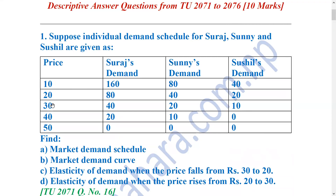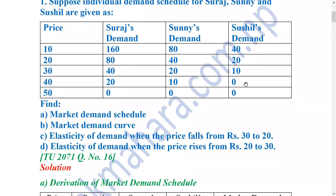The price is 10, 20, 30, 40, 50. Suresh's demand is 160, Sushil's demand is 80, and Sushil's demand is 40 and 20. This is the market demand schedule. The elasticity of demand when the price falls from Rs. 30 to Rs. 20, and when the price rises from Rs. 20 to Rs. 30.